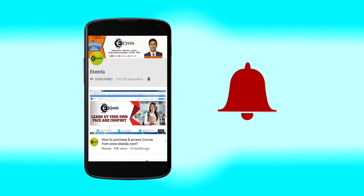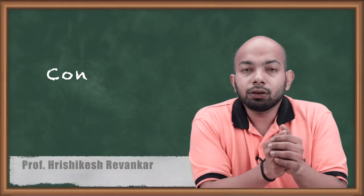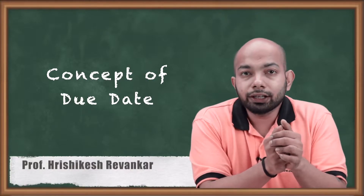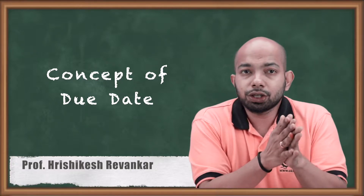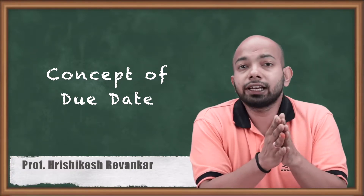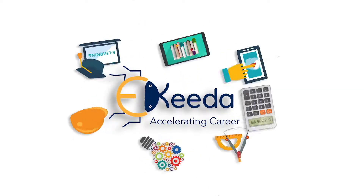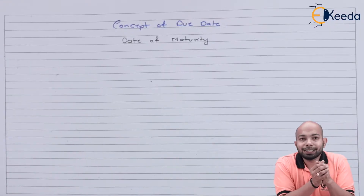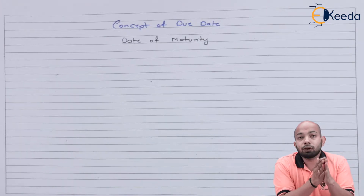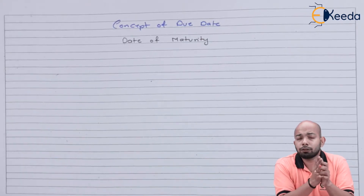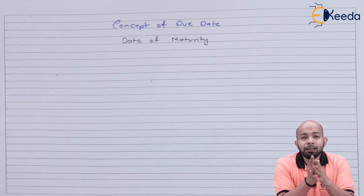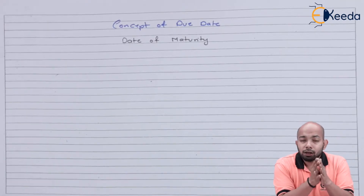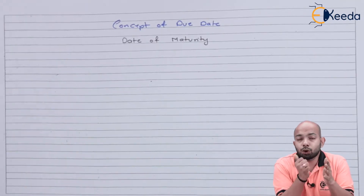Hello friends, we'll be discussing the concept of due date. We'll be understanding the kind of situation we have to go through while figuring out the due date. We already know what due date basically means. If the bill is payable on a specific date, that becomes the due date. If the bill is payable after few days or few months, you have to add three days of grace into it.